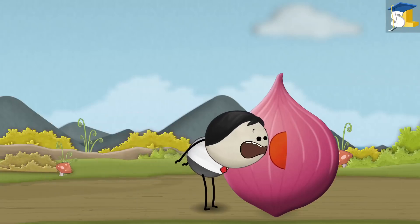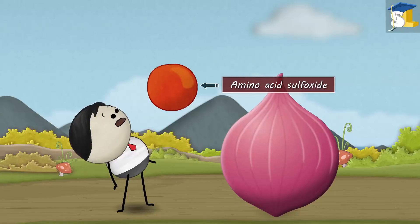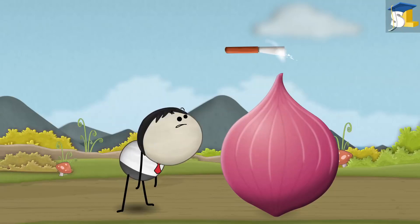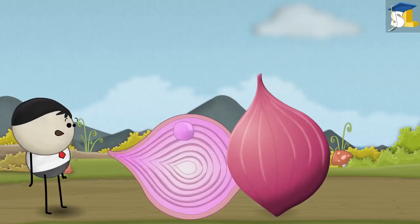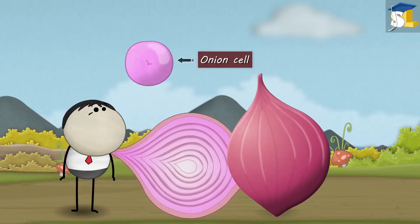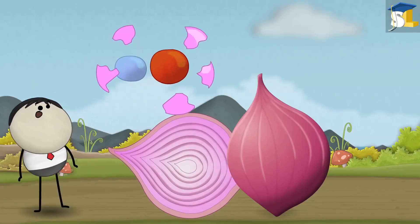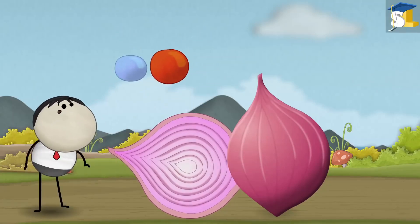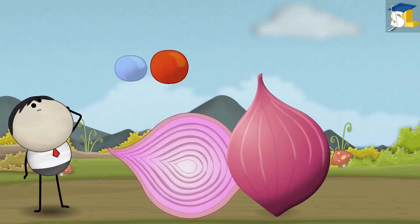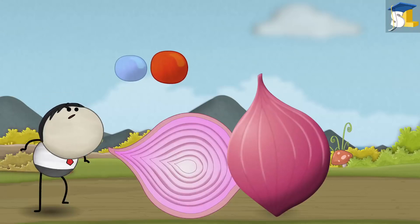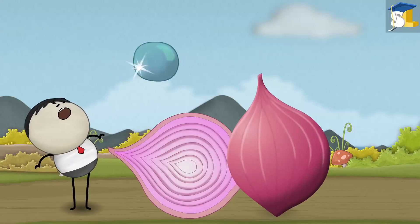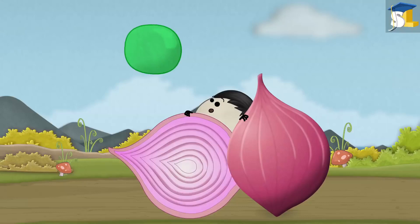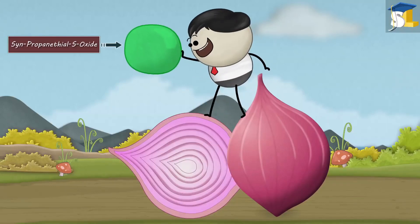Onions consist of amino acid sulfoxides. When we cut an onion, millions of onion cells rupture, releasing the amino acid sulfoxides along with some special enzymes. These special enzymes react with amino acid sulfoxides to form a chemical called synpropanthiol S-oxide.